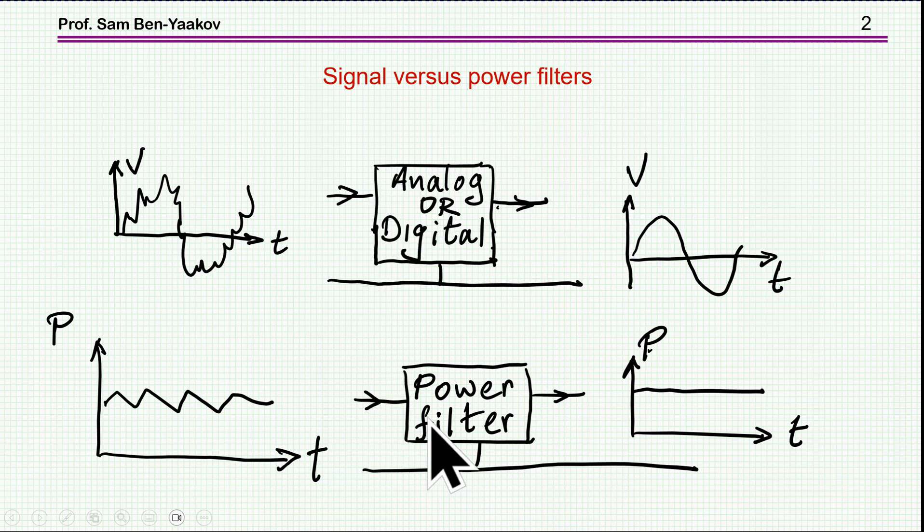On the other hand, when we are talking about power filters, we have a power source, which could be constant or pulsating, like after a rectifier. And then we need to filter it out such that the load will see a constant power. For example, a supply of 5 volt, 1 amp. Well, of course, it could change, but at a given operating point, you like to have a constant power. So you need somehow to smooth out this power by a filter, which I call this power filter.